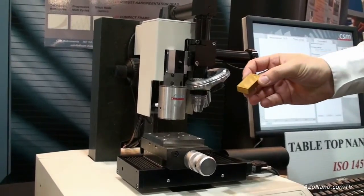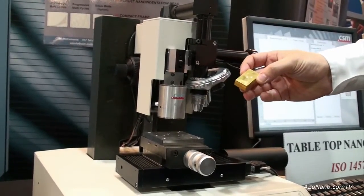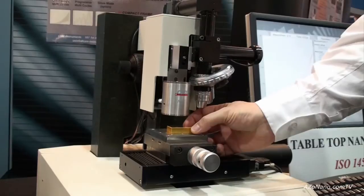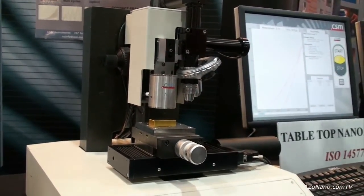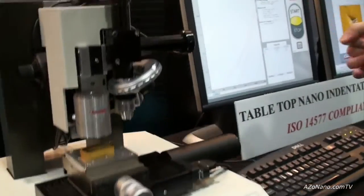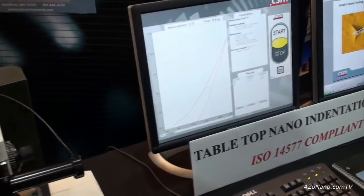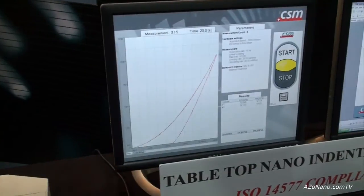It means you can take a sample like this one here. This is a coated steel component. The technician or whoever's running the machine can just stick the sample on, press a start stop button and basically the machine fully automatically does a pre-programmed line of indentations.